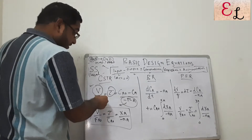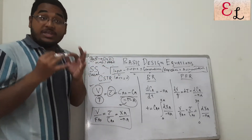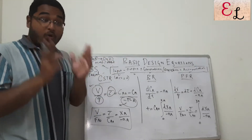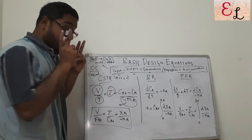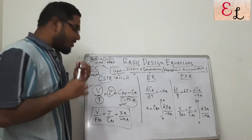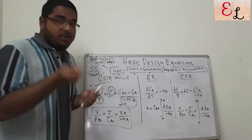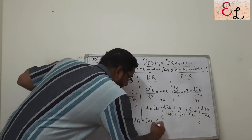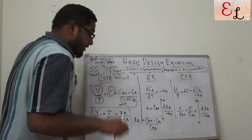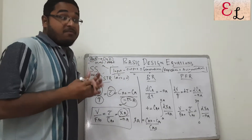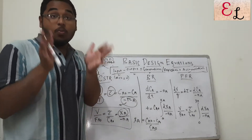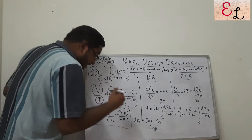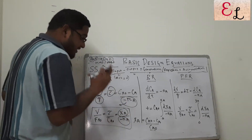The most common CSTR design equation is V divided by FA0, where FA0 equals Q times CA0 — the flow of A into the reactor. So V by FA0 equals residence time by CA0, which equals the conversion XA. Conversion is defined as XA equals (CA0 minus CA) divided by CA0: initial concentration minus final concentration over initial concentration. For example, XA equals 0.65 means 65% of A has been converted. Minus rA is the rate of reaction. This is the design equation for a CSTR.